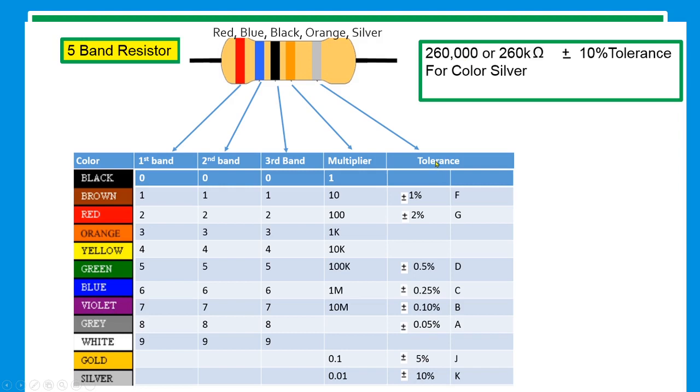Silver, our tolerance is 10 percent. So the reading is 260,000 or 260 kilo ohms.